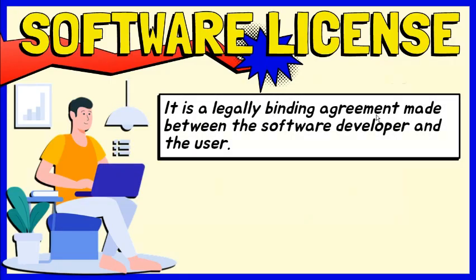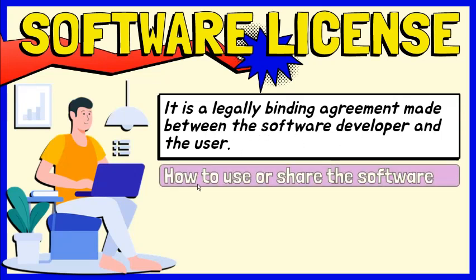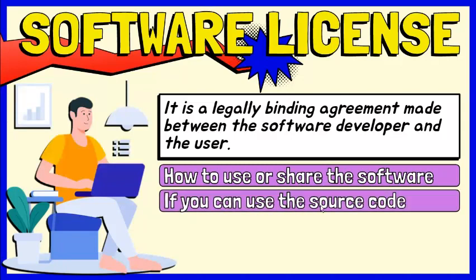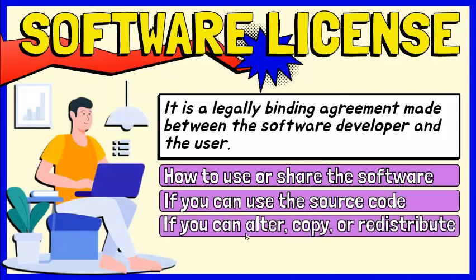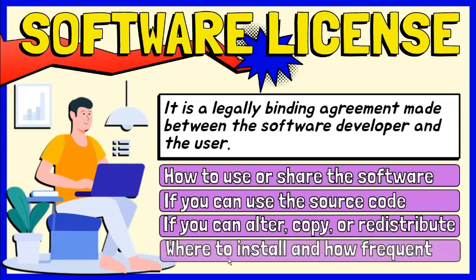A software license is a legally binding agreement made between the software developer and the user, outlining how the software can be used or shared, if the user can view the underlying source code, if the user can copy, alter, or redistribute the software, and where the software can be installed and how frequently.